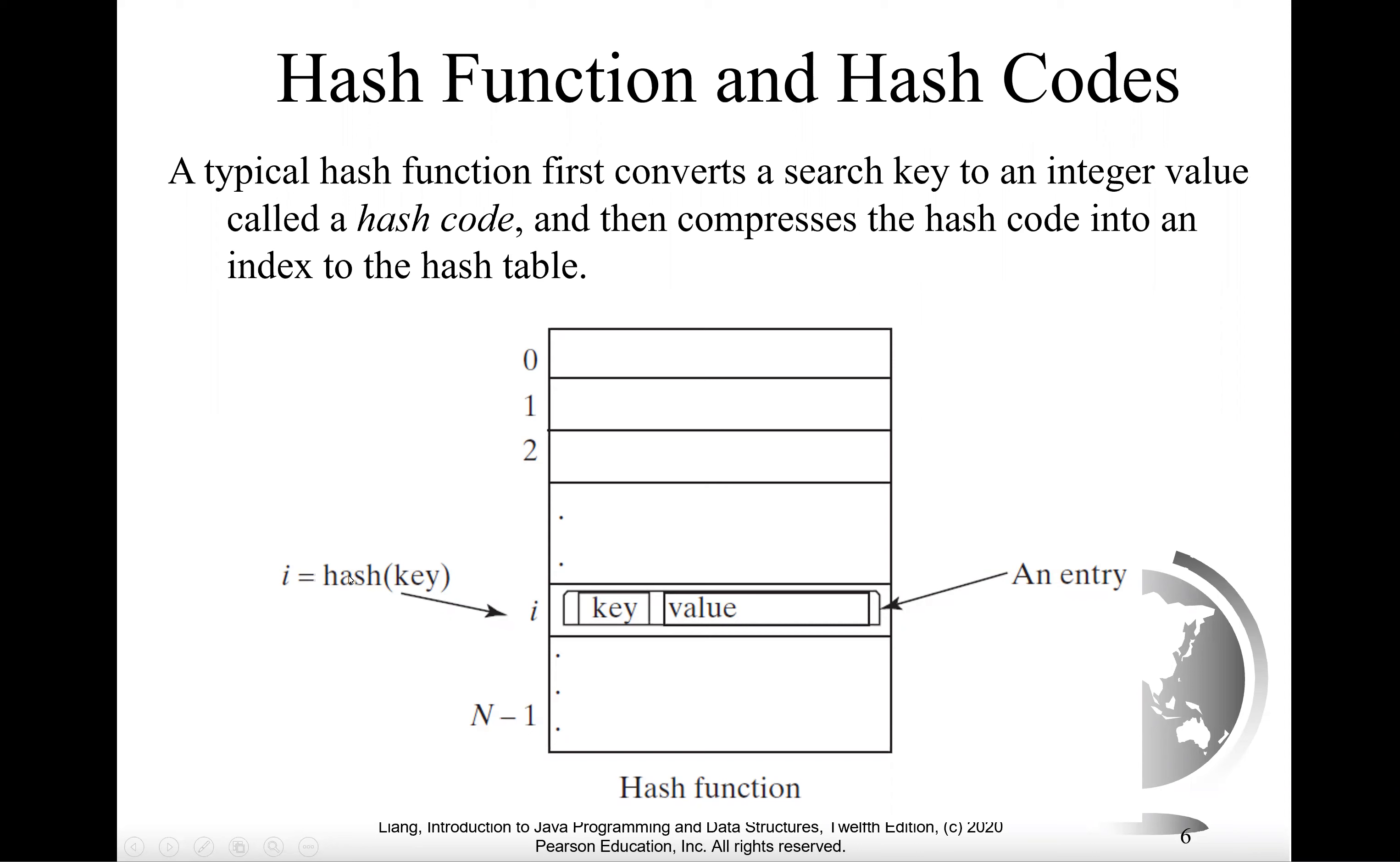You're going to have a hash code and then have this hash code compressed into the index i. This is from the key mapped to the index on the table. This is the entry. The entry is stored at this location at index i for the key with this hash code value.